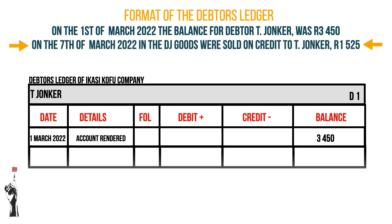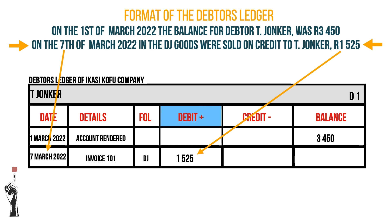On the 7th of March 2022, in the DJ, goods were sold on credit to T Younger for R1,525. This should be recorded in the debtor's ledger on the debit side — the plus side — because the debtor now owes our business more money. We should also remember that T Younger still owes us the previous balance, so the new balance is R4,975, which is R3,450 plus R1,525, because his debt increases.